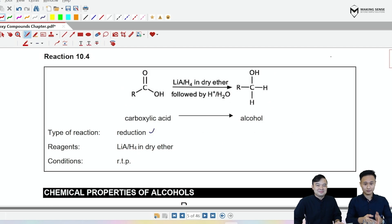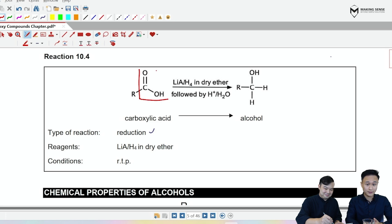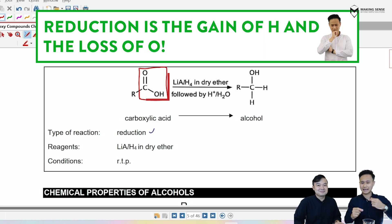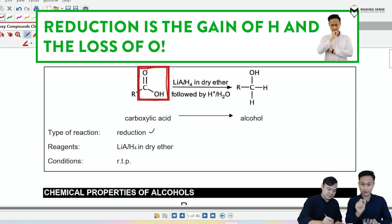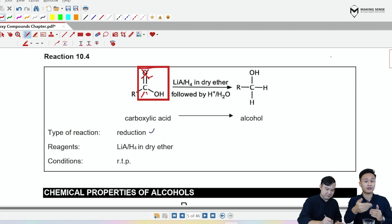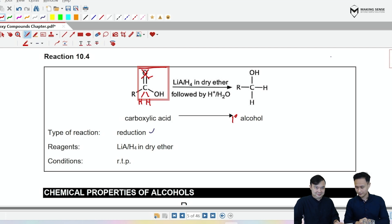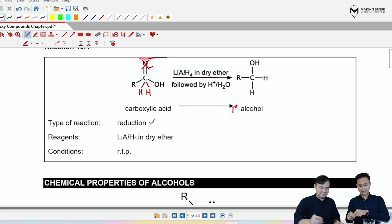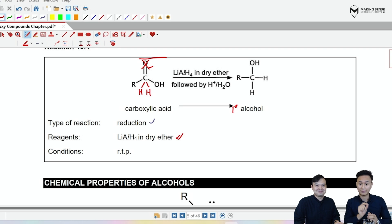In reaction 10.4, we are also going to use reduction to prepare alcohols, but we are going to reduce a carboxylic acid. Reduction is the gain of hydrogen, but it is also the loss of oxygen. The first thing we do is remove an oxygen from that C=O functional group, then gain two hydrogens on that carbon — and we get our alcohol. For this particular reaction, there is only one reducing agent you can use: lithium aluminum hydride in dry ether.